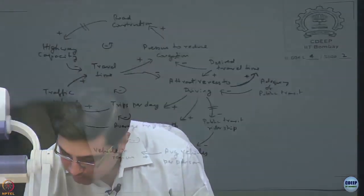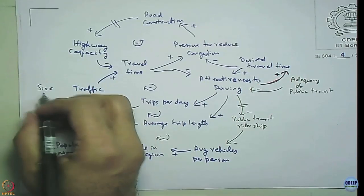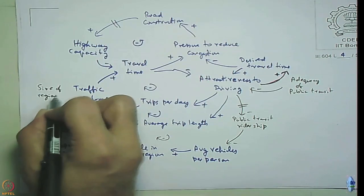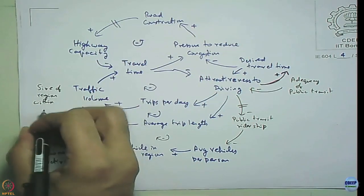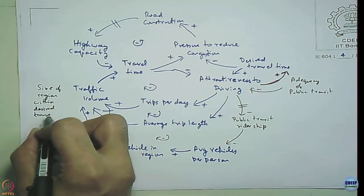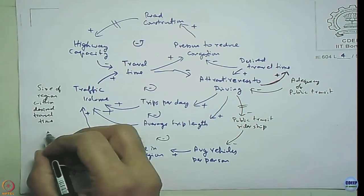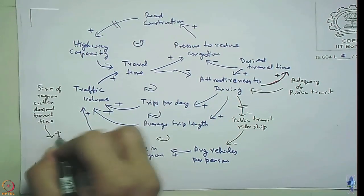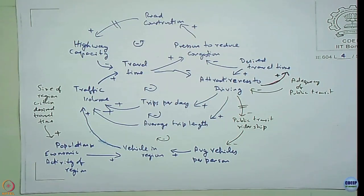And then your capacity follows. Just that mere fact of announcement of road construction itself results in the size of region within your desired travel distance to go up. We can bring that aspect also inside the system. Let us just call it a simple variable called size of region within desired travel time.